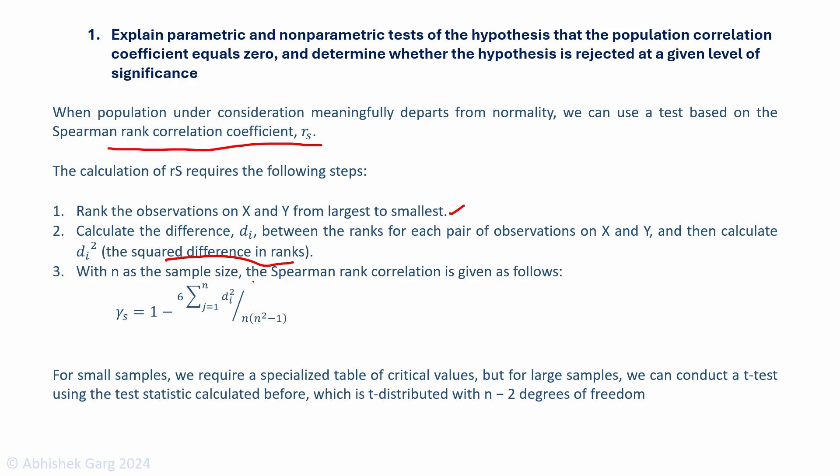With n as the sample size, the Spearman rank correlation coefficient is given by this formula. Now for small samples, we require a specialized table of critical values. But for large samples, we can conduct a t-test using the stat that we used for population correlation coefficient with n-2 degrees of freedom.